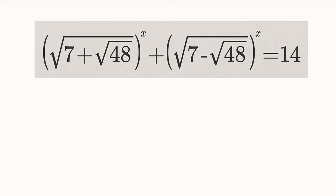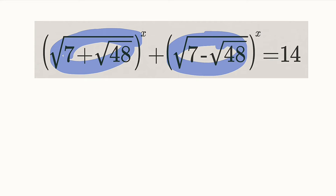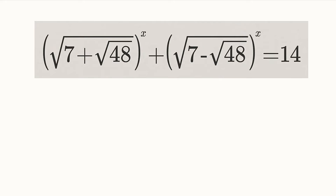Before we start with the solution, I want you to observe something. Look at the terms under the square root. We have 7 plus root of 48 and here we have 7 minus root of 48. So if we multiply them, we are going to obtain a difference of two squares. A square root can be written as a power of 1 over 2 from the laws of indices.